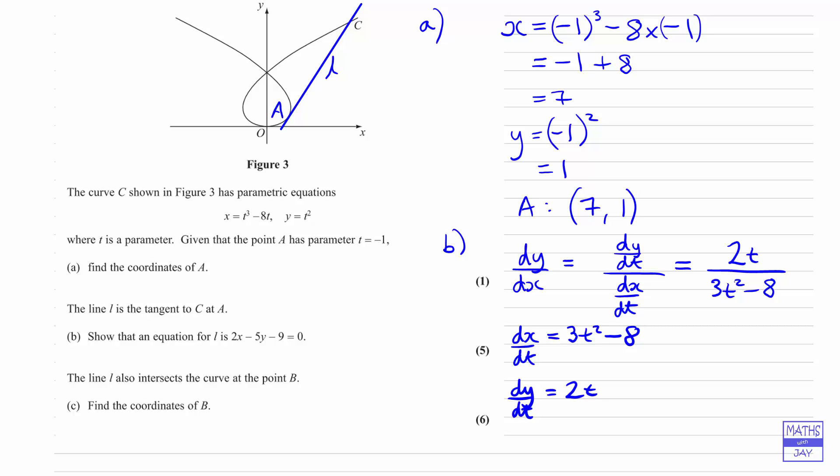We found the gradient in terms of t, but we want the gradient at point A. So we need to substitute the relevant value of t, which is negative 1. Let's call the gradient m.